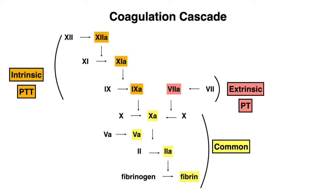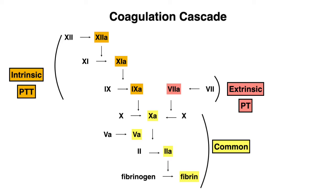So how does heparin affect the coagulation cascade? We need to look at antithrombin, which is an endogenous anticoagulant. Heparin enhances the effect of antithrombin. Antithrombin inhibits factors 2 and 10 primarily, and this is where we can differentiate between the two: unfractionated heparin affects both factors 2 and 10, whereas low molecular weight heparin predominantly affects factor 10. Unfractionated heparin has a longer structure, and this longer structure is what is required to allow for the interaction between antithrombin and factor 2.